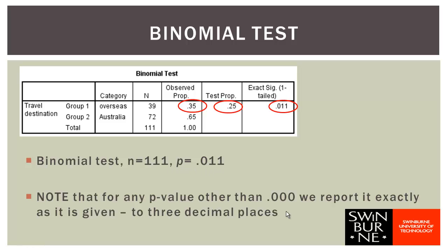As with the one-sample t-test, the test is significant if the p-value is less than 0.050. In this case the p-value is 0.011, which is less than 0.050, so the test is significant. We can conclude that the sample proportion is significantly higher than 0.25 — we've got enough evidence to convince us that the proportion of Australians who travel overseas has increased since 2010. Note that the p-value is reported to three decimal places exactly as given in the SPSS output. The only exception is when SPSS gives 0.000; in that case, you report p < 0.001.